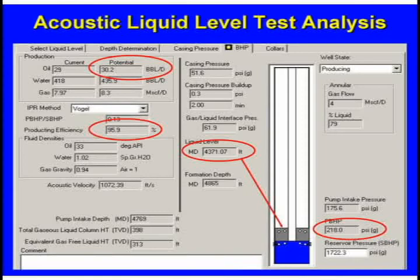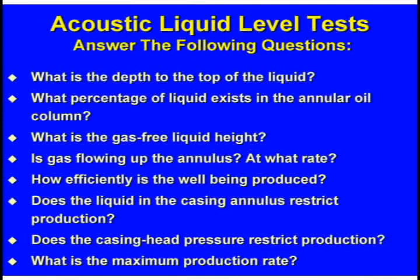That's what we went out there to the well for — how efficiently are you producing the well? I'm going to look at the motor, the gearbox, and everything else, and try to reduce rod failures. But really, I want to get liquid out of the well, and we're doing a pretty good job producing the reservoir. Liquid level test: what's the depth at the top of the liquid level? What percentage of liquid exists in the annulus? What's the gas-free liquid level height? Is gas flowing up the annulus, and at what rate?